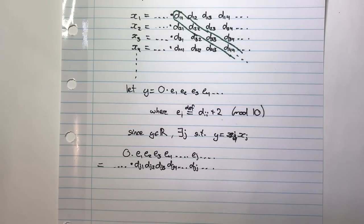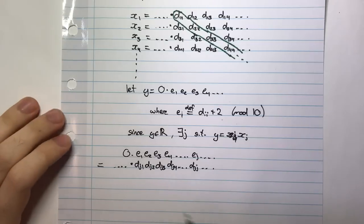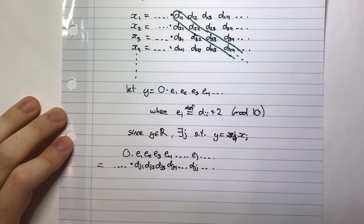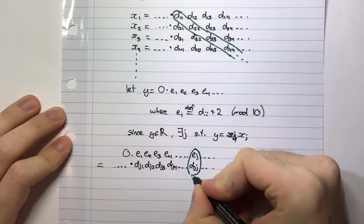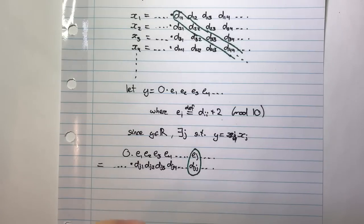So what does this mean in particular? This means that I have two real numbers. Now if they are the same, that means that these digits here should be the same. So that means in particular, this part here, EJ should be equal to DJJ.